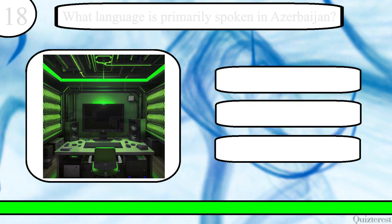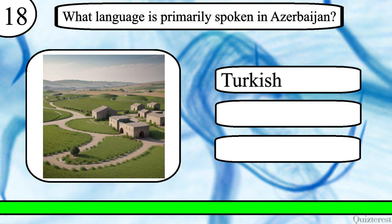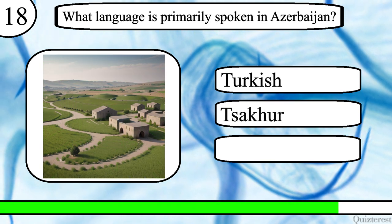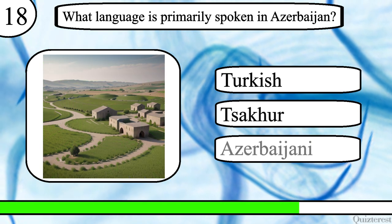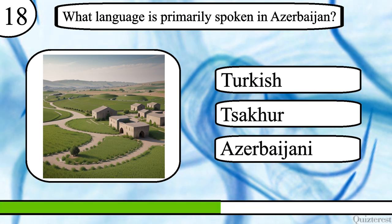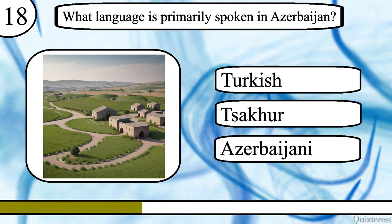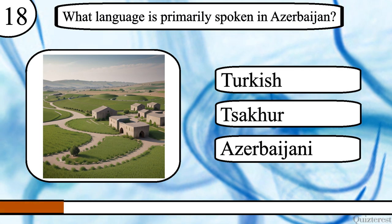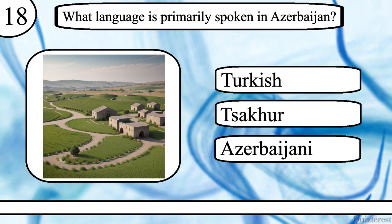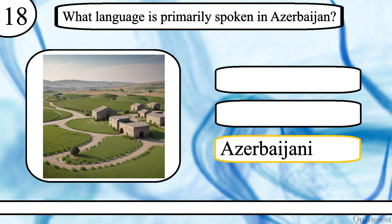Question 18. What language is primarily spoken in Azerbaijan? Turkish, Tsakur or Azerbaijani? The correct answer is Azerbaijani.